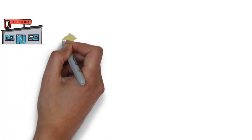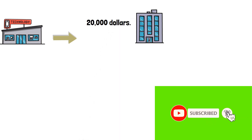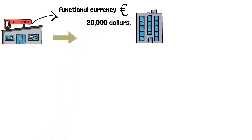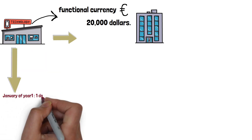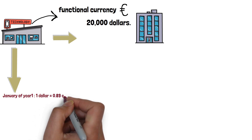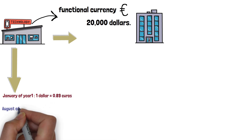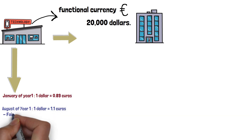In January of year 1, an entity acquires an investment property for 20,000 dollars. The entity's functional currency is the euro. The exchange rate and fair value of the investment property are shown below. In the initial recognition of January of year 1, 1 dollar is equal to 0.89 euros. In August of year 1, 1 dollar is equal to 1.1 euro, and the fair value equals 25,000 dollars.